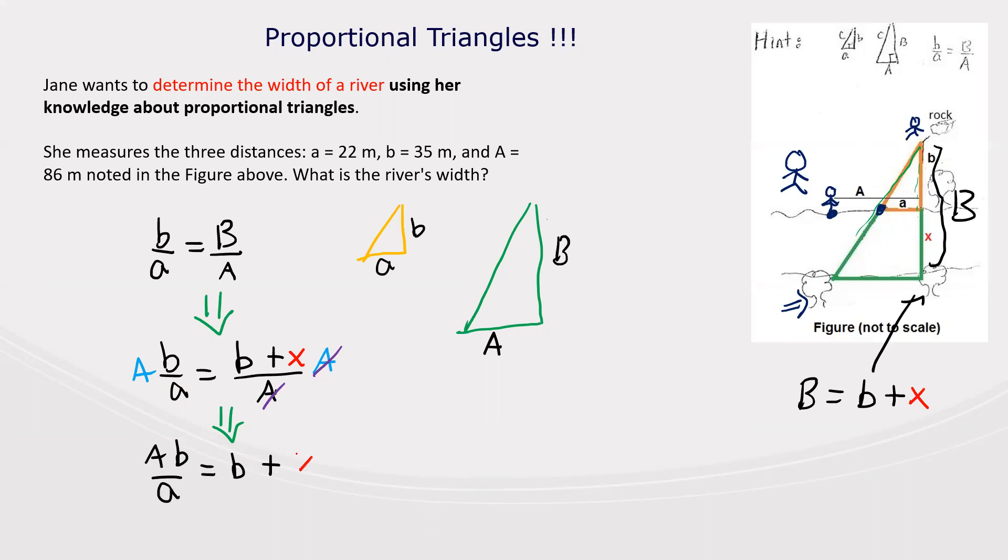Because we're solving for X, I need to subtract b from both sides, and that way this cancels out. And my final solution is X, which is the width of the river she's looking for, equals capital A times b over lowercase a minus b.